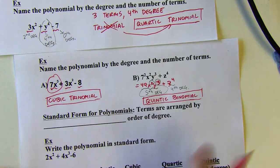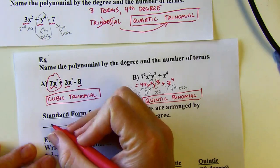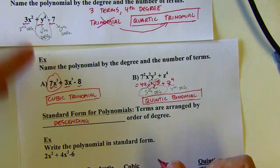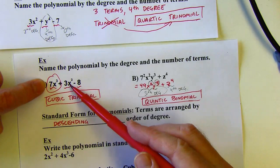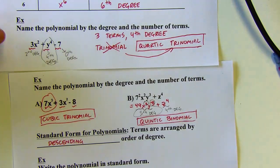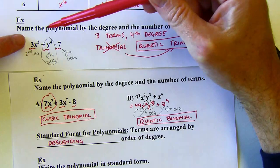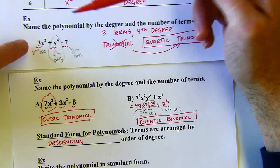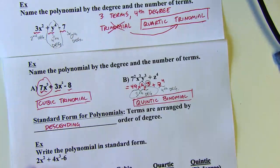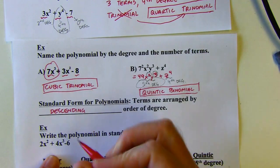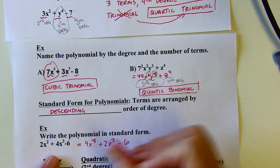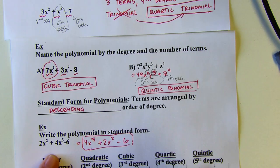Standard form for polynomials means the terms are arranged in descending order of degree. So a polynomial is in standard form when you go from the highest degree term down to the lowest. For example, if the highest degree term is in the middle, it's not in standard form — you'd rewrite it as y to the fourth plus 3x squared minus 7. So you always put the highest degree term first, then work your way down.